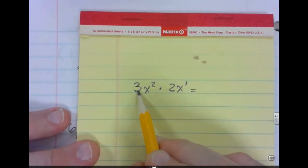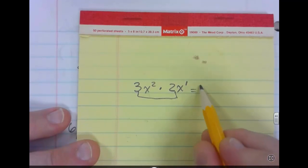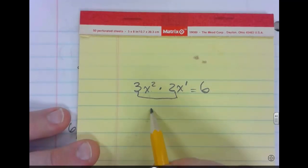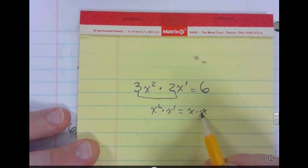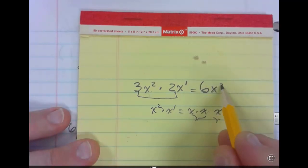First thing we're going to do is multiply the 2 and the 3 together and that will give us 6. But then we have an x to the second times an x to the first. And that's technically going to give us x times x times x. This is x to the second here. This is x to the first, which will give us x to the 1, 2, 3 power. So x to the third power.